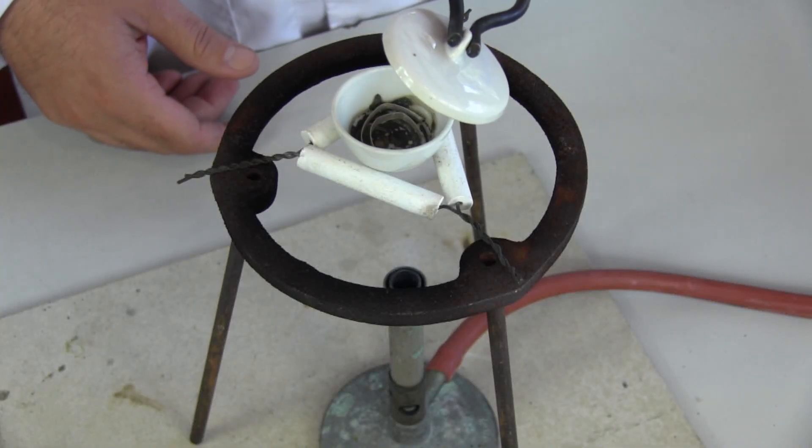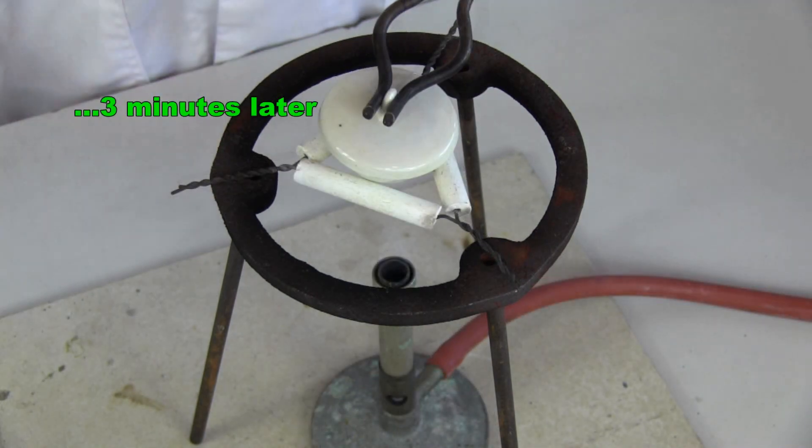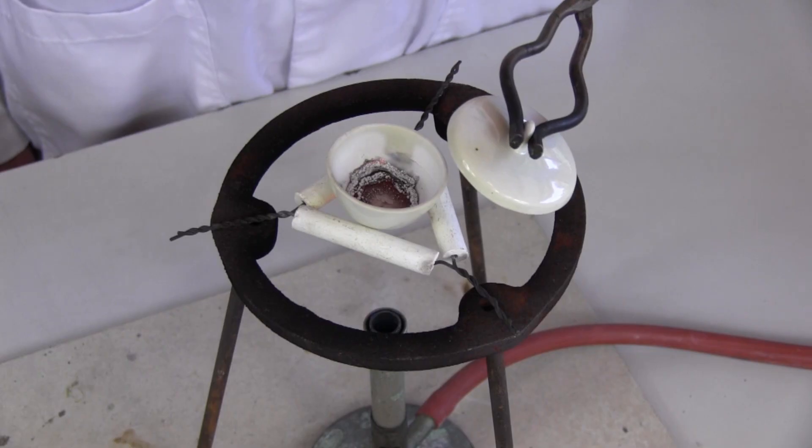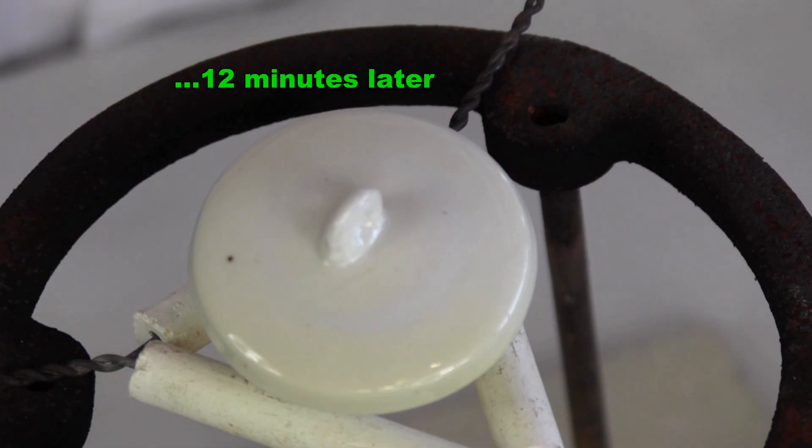If we heat the magnesium in the crucible, it eventually starts to burn. By placing the lid on the crucible, we can slow the burning process and limit the amount of smoke that escapes.